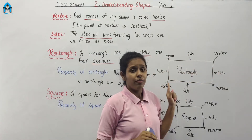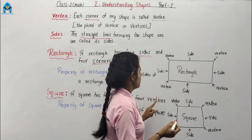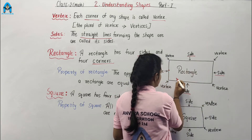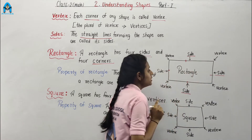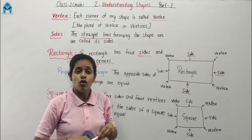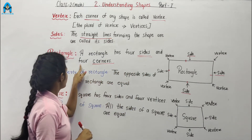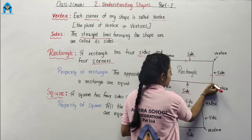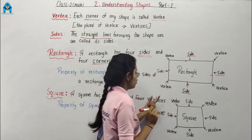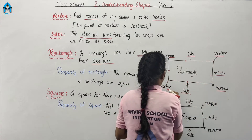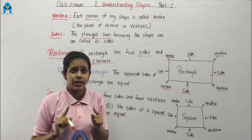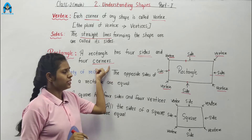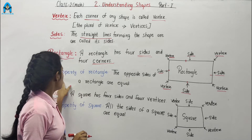Just like this — this is a rectangle. One, two, three and four. These four straight lines are the sides. So rectangle has four sides and four corners. One, two, three and four — four vertex. Property of rectangle: the opposite sides of a rectangle are equal.